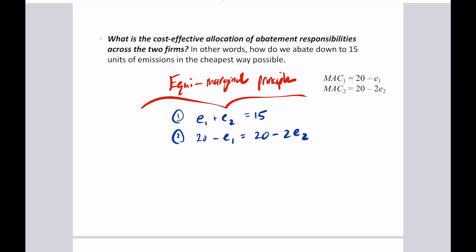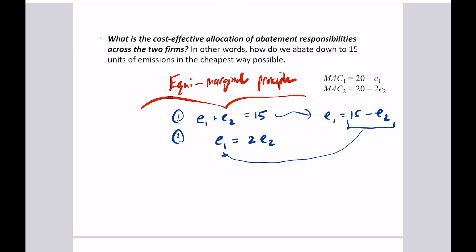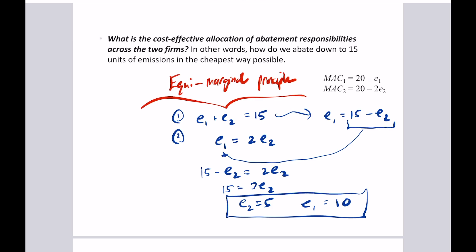With two equations and two unknowns, I rearrange E₁ + E₂ = 15 to get E₁ = 15 − E₂, then substitute into E₁ = 2E₂ to get 15 − E₂ = 2E₂, so 15 = 3E₂, giving E₂ = 5 and therefore E₁ = 10. This is the cost-effective split of emissions responsibilities between the two firms: Firm 1 emits 10 units (abates 10 from its unregulated 20), and Firm 2 emits 5 units (abates 5 from its unregulated 10).